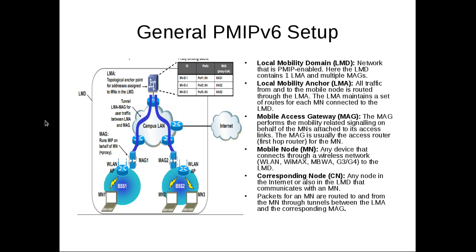Fifth is CN, a Correspondent Node, any server that is on the network side. You can see the entire component on the left side of the screen, which is a generic PMIPv6 setup.